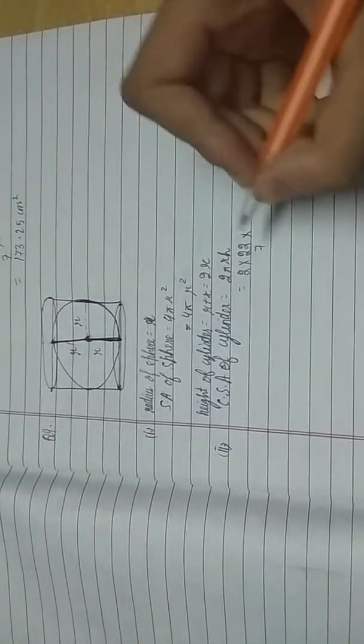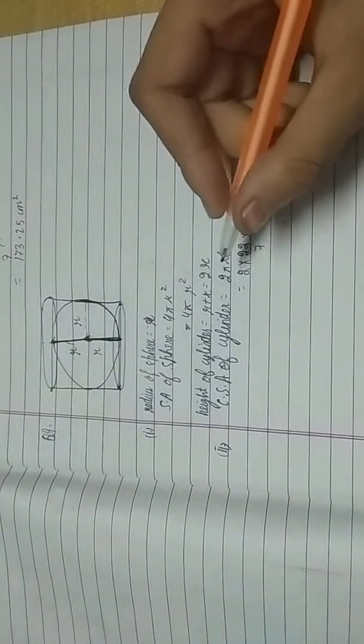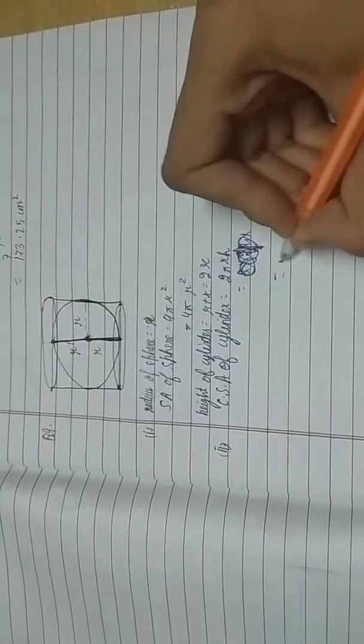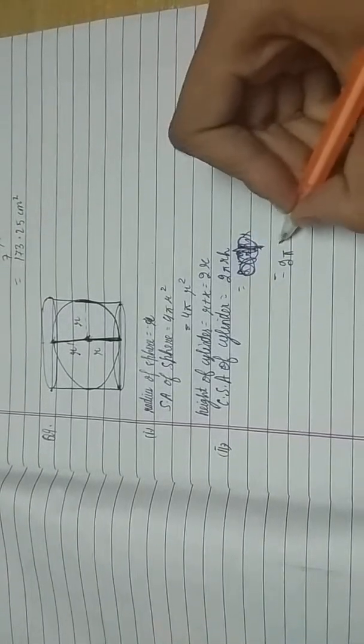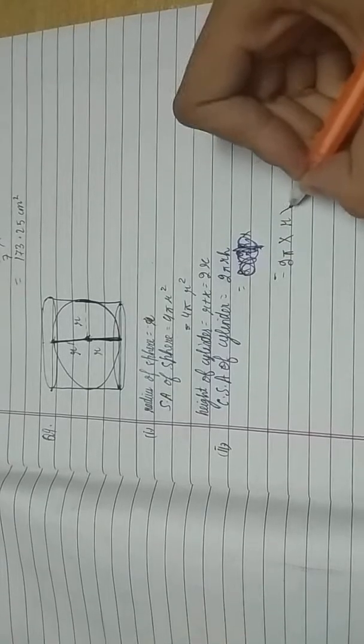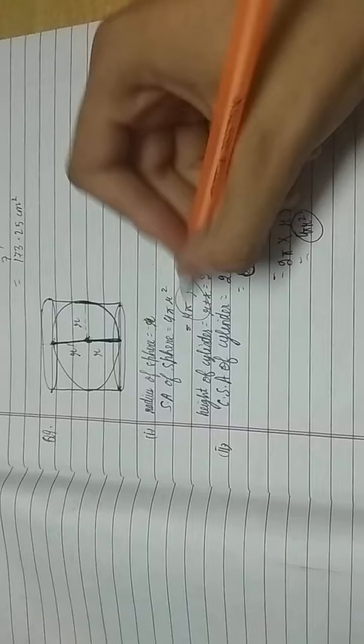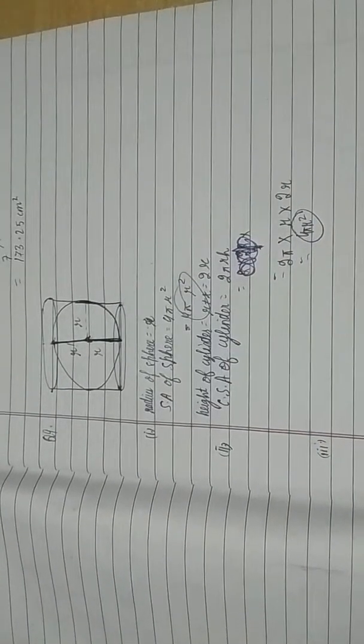Curved surface area would be 2π into... let's leave it like π only, no need to calculate. 2π into radius r and height 2r. So 2 times 2 is 4πr². See, if you see this and this, these both areas are same.